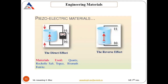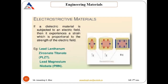For piezoelectric materials: applying compressive or tensile force causes the material to produce electricity. Examples include quartz, Rochelle salt, topaz and bismuth ferrite. For electrostrictive materials: providing electricity causes deformation. Examples include lead lanthanum zirconate titanate and lead magnesium niobate (PMN). For magnetostrictive materials: their shape changes — they elongate or get thinner — depending on the applied magnetic field. Examples include cobalt and Terfenol-D.